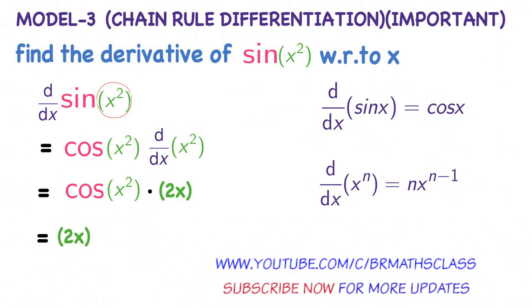So this can be written as 2x times cos(x²). The derivative of sin(x²) is 2x cos(x²). Chain rule differentiation is very easy differentiation, but there is a little bit of a trick. If you practice five problems carefully, you can understand how to use chain rule differentiation.